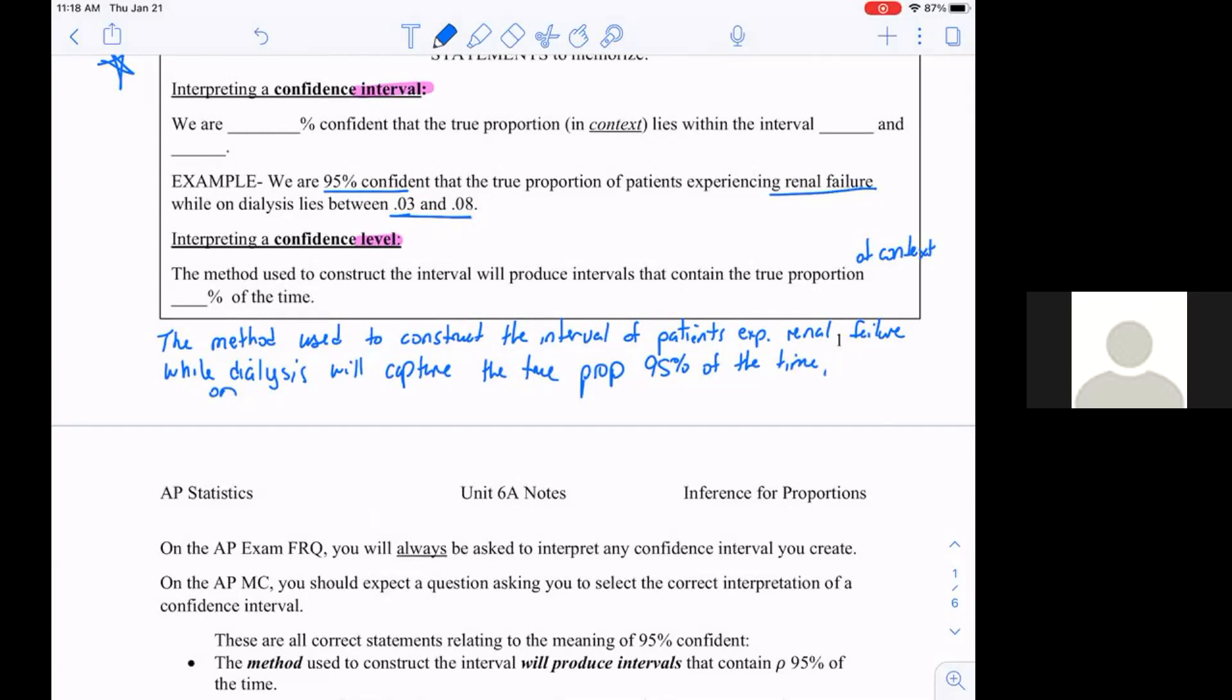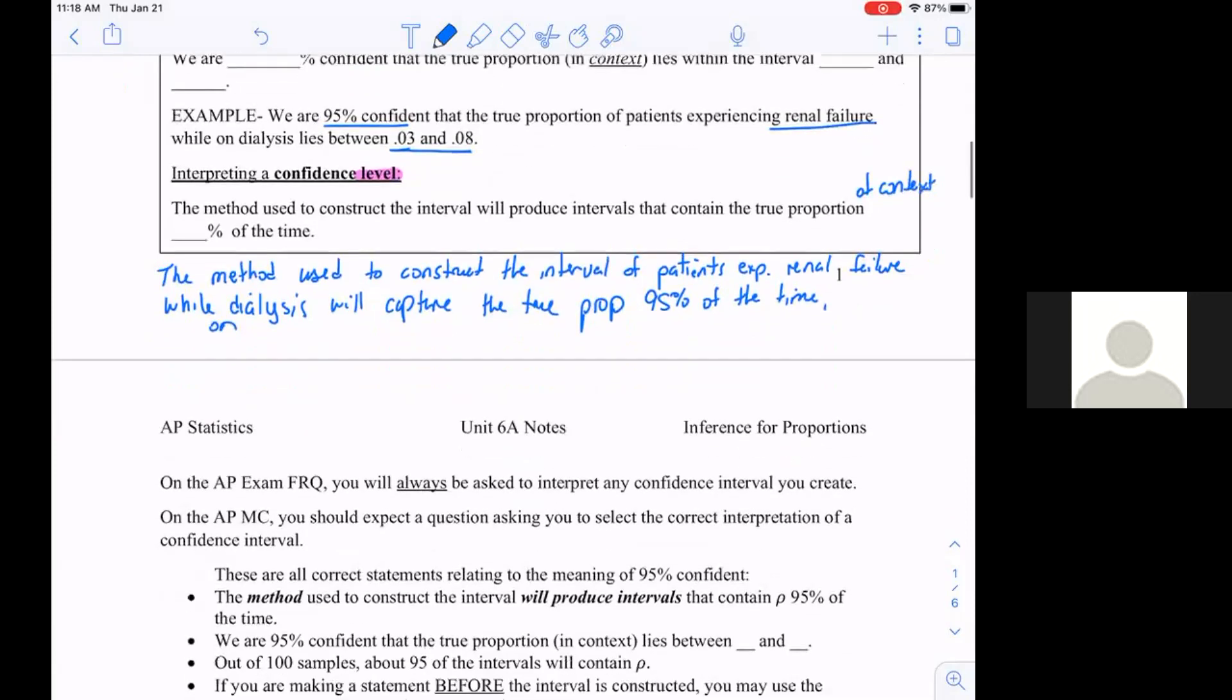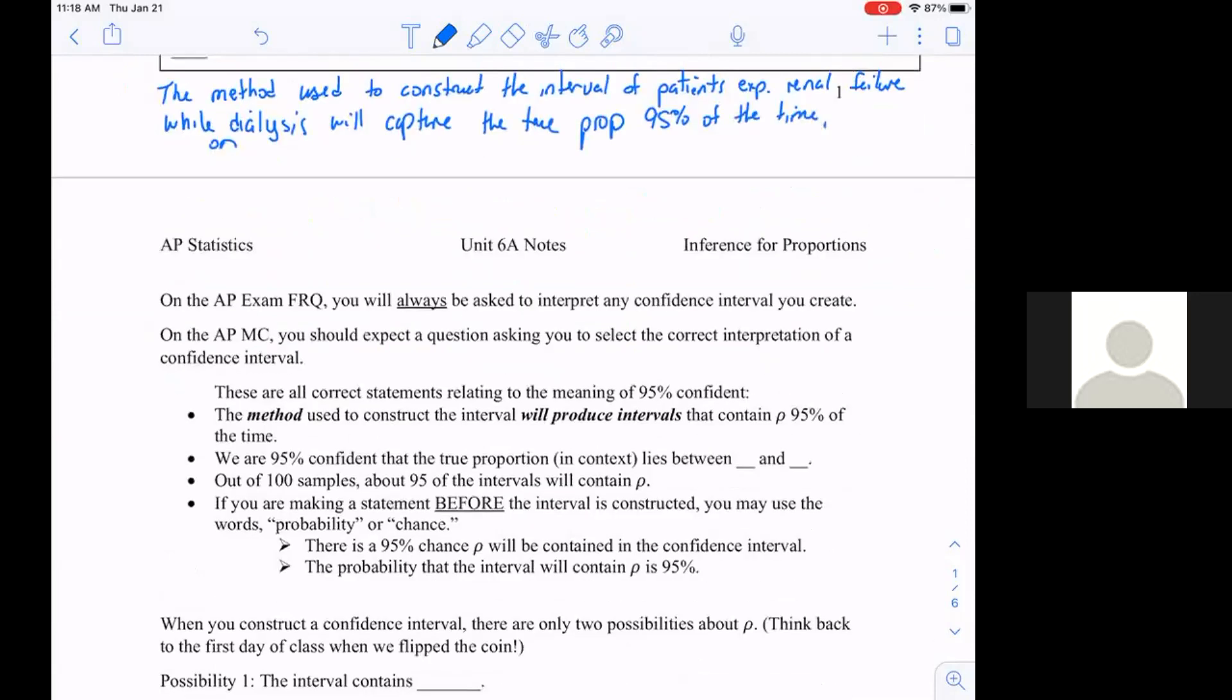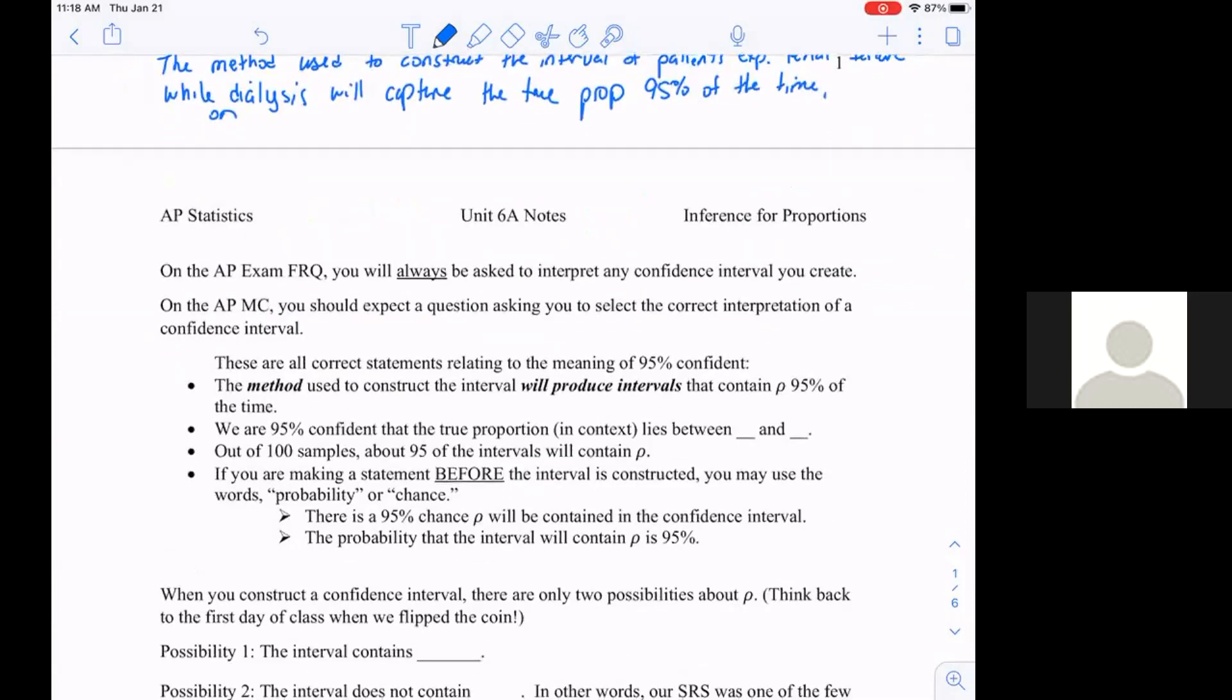This chapter we're going to do intervals for proportions and a hypothesis test for proportions. Next chapter we'll move into intervals. You've got to pay attention whether you did a mean or did a proportion, because the words you use matter.